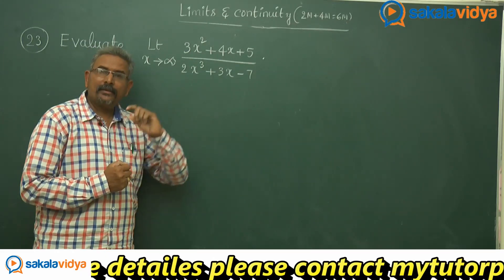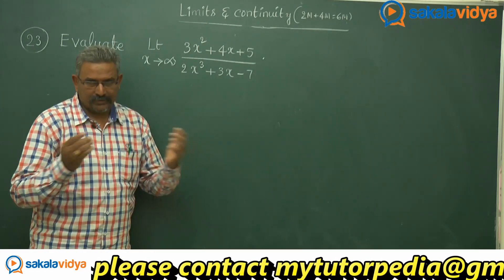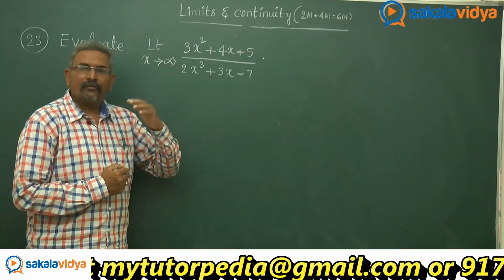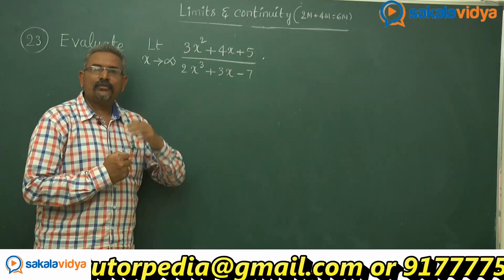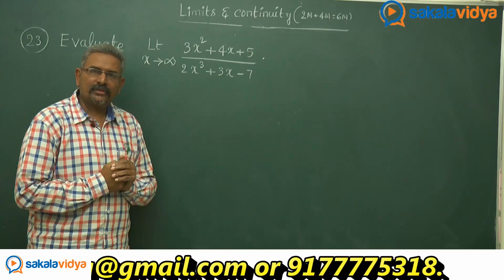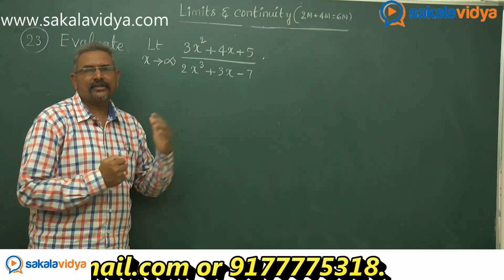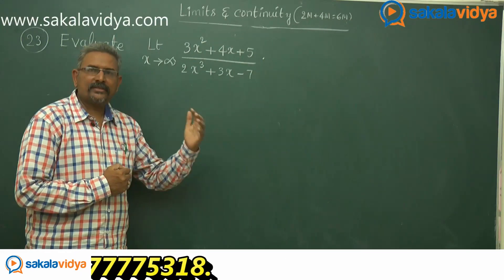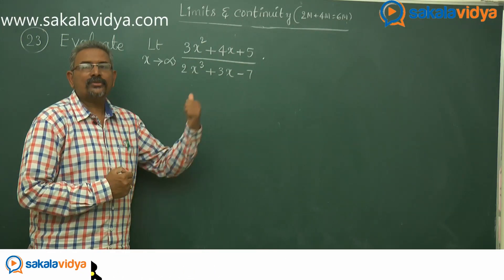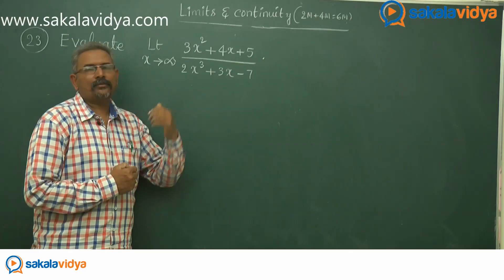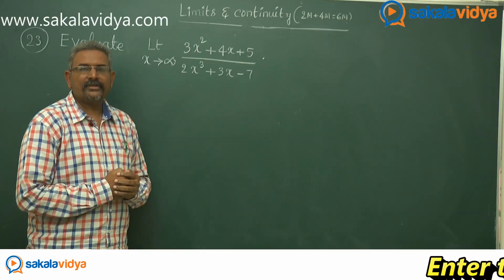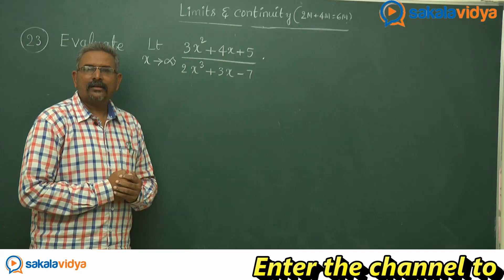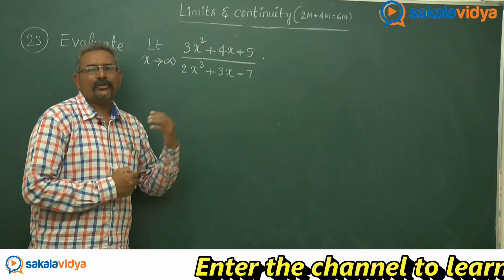The highest power of x is x cube here. So that means we divide both numerator and denominator by x cube, then apply the limit, so that we will get the answer. This process has to be followed to solve these kinds of problems.